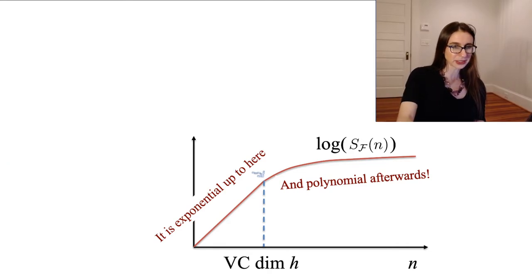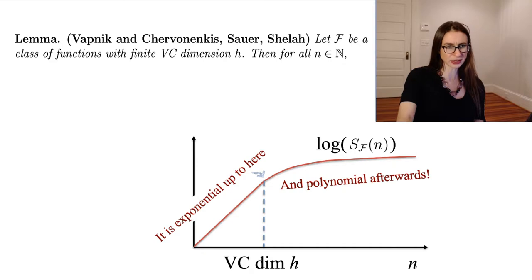And in particular, there's a theorem, which is usually called Sauer's Lemma, which provides that exact bound. So it says, let F be a class of functions with finite VC dimension H.